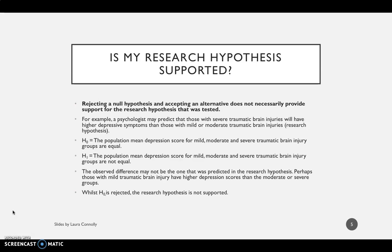However, we know that our alternative hypothesis doesn't prescribe a particular direction or predict which group might be higher or lower. So we've collected our data, run our analysis, and what we've actually found is that the observed difference may not be the one that was predicted in the research hypothesis. Perhaps those with mild TBI are found to have higher depression scores than the moderate or severe groups. So whilst we can safely reject the null hypothesis that there is no difference between the three groups, our research hypothesis is still not supported — we predicted the severe group to have higher depressive symptoms, but our results actually show that the mild group has the highest depressive symptoms. So our research hypothesis in this case is not supported.